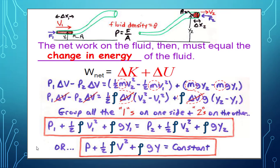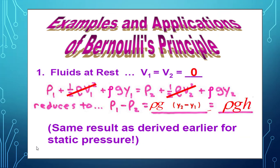Let's go to another application, examples and applications of Bernoulli's principle. If our flow is at rest, at rest means velocity equals zero, so we can cancel the term half rho v squared in Bernoulli equation. As we see, P1 minus P2 delta V equals rho g (y2 minus y1) equals rho g h, which is pressure in static pressure.